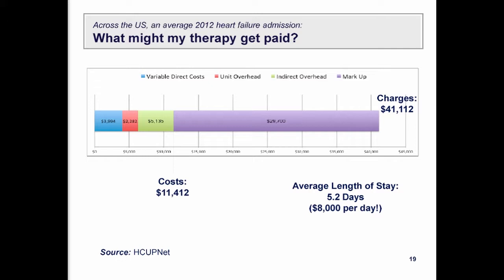The average bill for a patient admitted with heart failure as their principal diagnosis is forty-one thousand dollars. The cost though is about a quarter of that — about eleven thousand dollars. What you can assume in most cases is that the actual identifiable costs associated with a patient are about forty percent of that eleven thousand. So four dollars out of every ten that goes into inpatient care can actually be tagged to a particular patient — their medications, nursing, and specific tests.